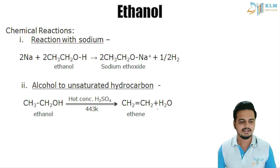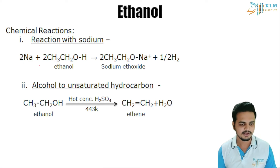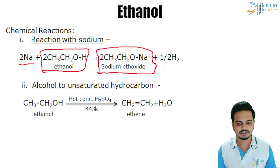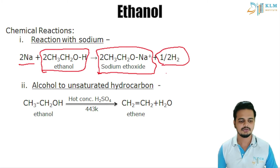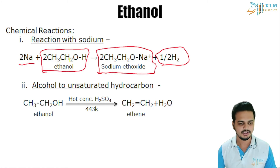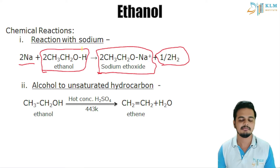Now let us see the chemical reactions of ethanol. Ethanol reacts with sodium to form sodium ethoxide and half a molecule of hydrogen gas. In this reaction, sodium is replacing one hydrogen atom — this is a substitution reaction.